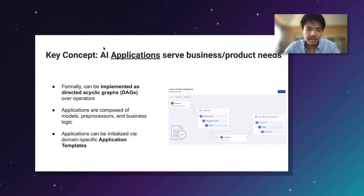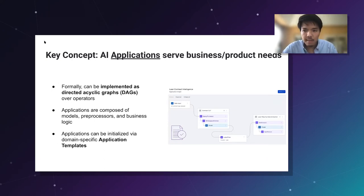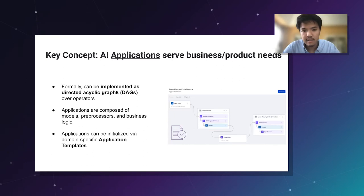Next, an AI application is more formally a directed acyclic graph — a DAG — implemented over one or more operators. An application can be composed of models, pre-processors, heuristics, and additional business logic to actually solve the business or product problem. Critically, one of the things that ends up being really helpful is having the notion of an application template, which can templatize recommended workflows across different domains — making it easy to start with sensible defaults and iterate from there.